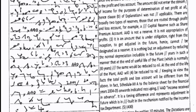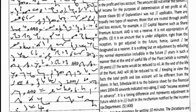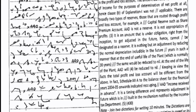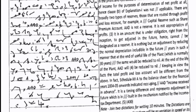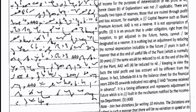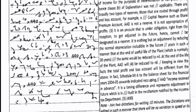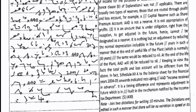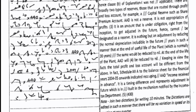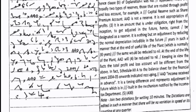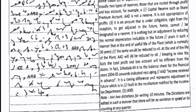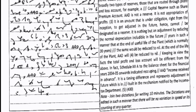Keeping in view the facts, Schedule 12A to the balance sheet for the financial years 2004-05 onwards indicated re-categorizing AAD as income received in advance. It is a timing difference and represents an adjustment in the future, which is inbuilt in the mechanism notified by the income tax department.